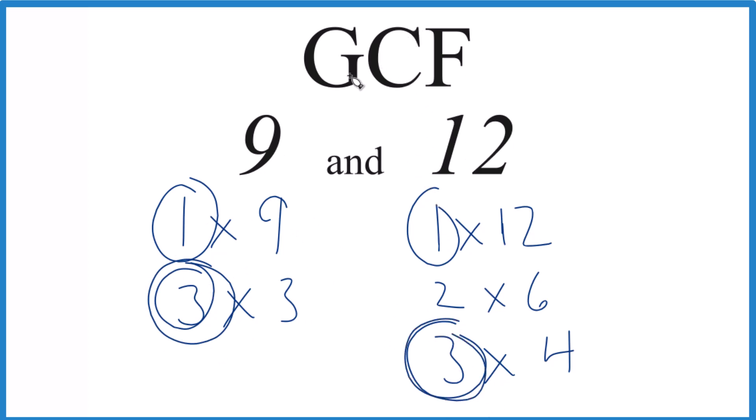So in answer to our question, the greatest common factor for 9 and 12, that's 3. You could do this other ways, like prime factorization, but for these smaller numbers, this works really well.